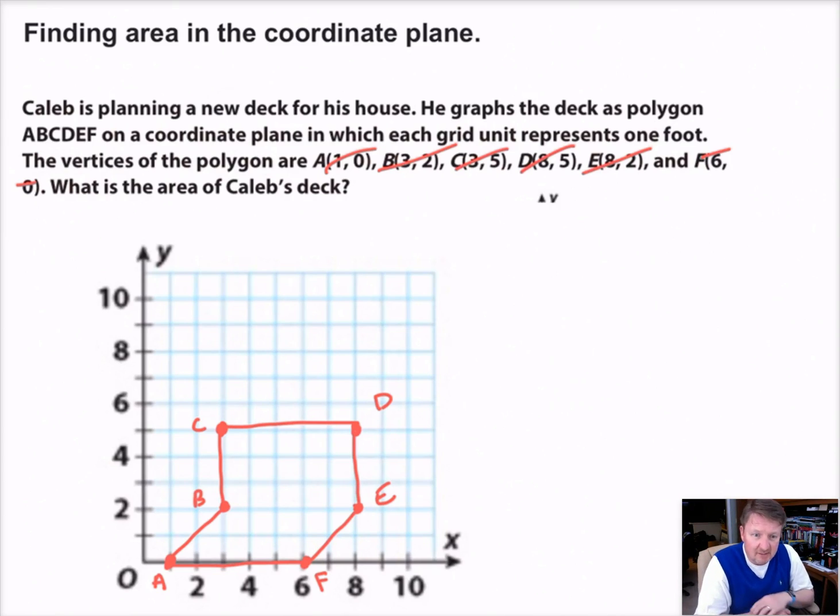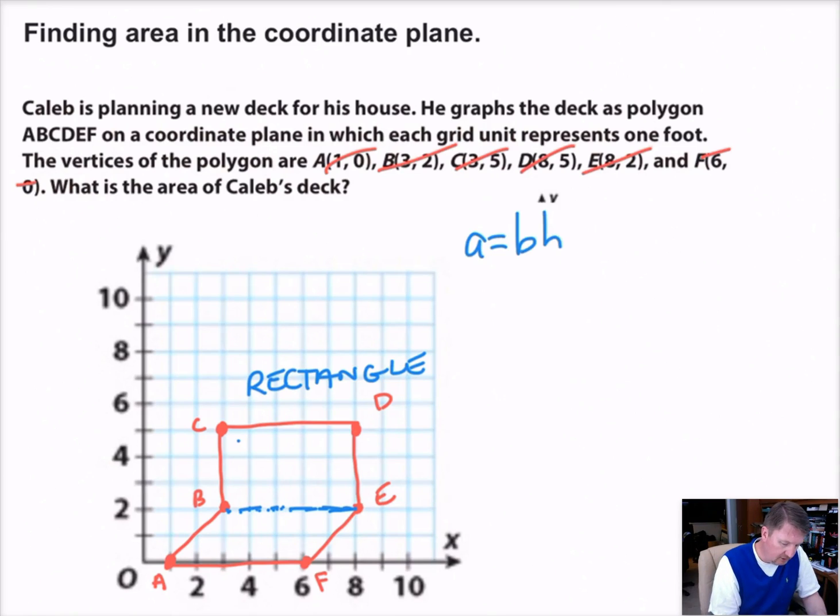So this to me looks like a compound shape. We can divide this up into two smaller shapes. I'm going to draw a little dotted line there. Here I have a rectangle. There's a rectangle. What's the formula for area of a rectangle? Well, area equals base times height. Area equals base times the height. I know it's 1, 2, 3 high. And I know it's 1, 2, 3, 4, 5 across the thing. So I got area equals the base, which is 5, times the height, which is 3. So the area of my rectangle is 15 square feet.